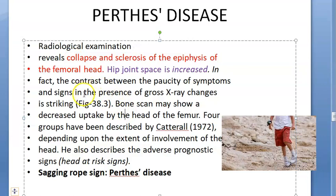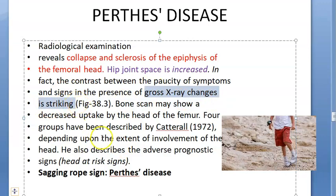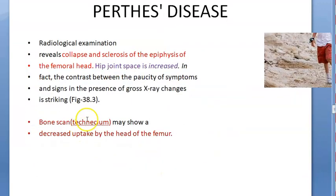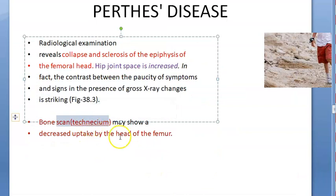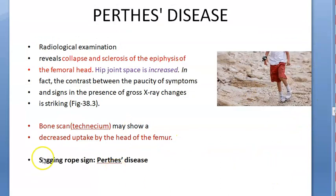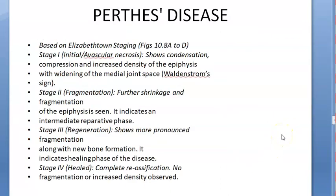On bone scan using technetium radioactive isotope, there is decreased uptake by the head of the femur. There is also a characteristic sagging rope sign seen on radiological examination.